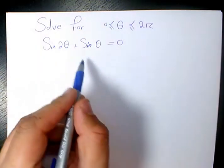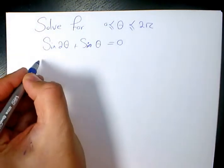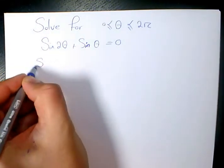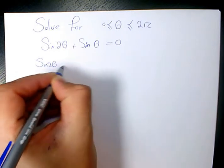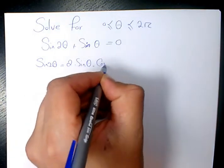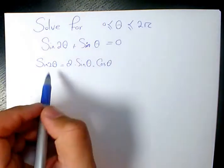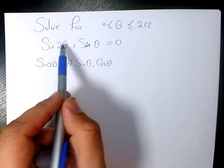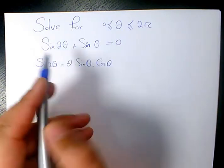So the first thing I need to do from the double angle formulas, you remember sine 2 theta. Sine 2 theta is 2 times sine theta times cosine theta. We had this formula before. So instead of sine 2 theta, I can write 2 times sine theta times cosine theta.